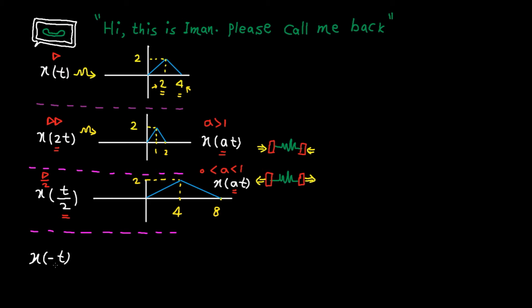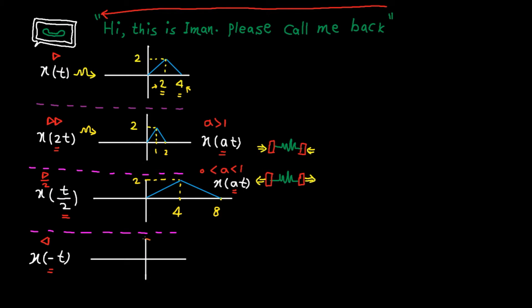Now let's talk about x(-t). This means we play the signal from the end to the beginning. That's why this transformation is called time reversal. So if the original signal is "Hi, this is Iman, please call me back," the reverse plays backwards. To plot x(-t), all you need to do is reflect the signal with respect to the y-axis. So 2 goes to -2 and 4 goes to -4. The amplitude stays the same. In general, for x(at) when a is negative, we need to reflect the signal with respect to the y-axis.